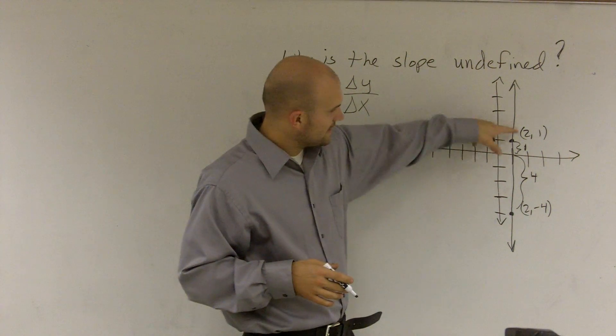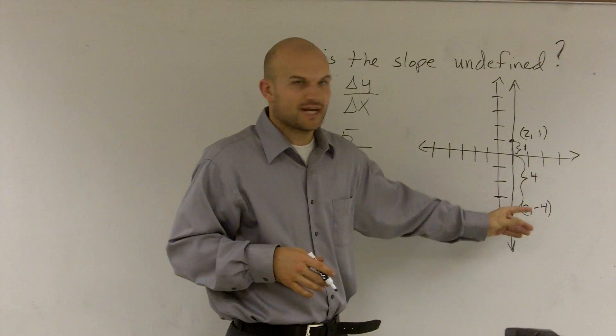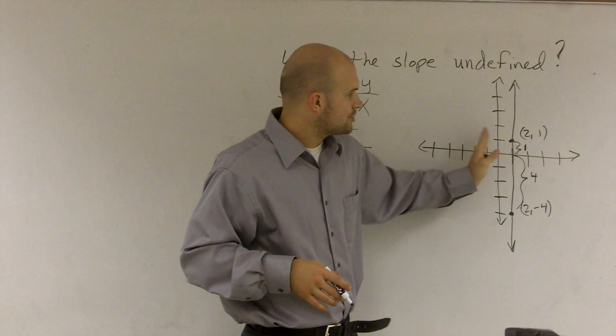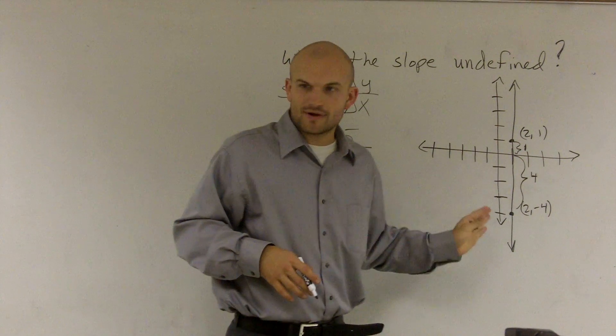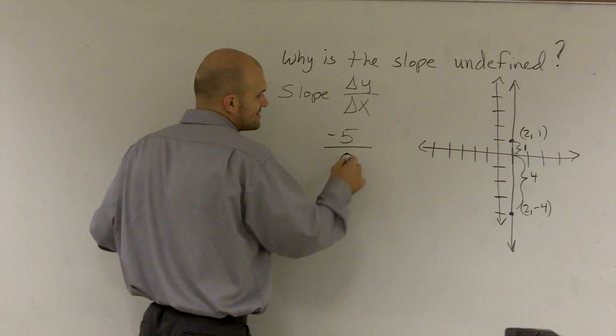But then I say, from here to here, how did I change? To go from 2, I'm sorry, left and right, 2 over to 2. I didn't move left or right at all, right? So my change was 0.